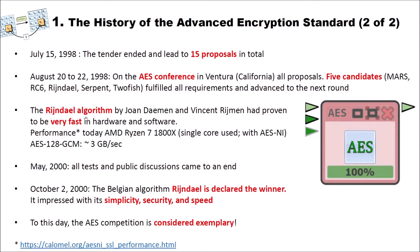The Rijndael algorithm by Joan Daemen and Vincent Rijmen had proven to be very fast in hardware and software, and indeed this then became the new AES. The performance of this algorithm today is really incredible. For instance, on an AMD Ryzen 7 1800X, only on a single core and using AES-NI — that is the assembler instruction set for the AES cipher — this machine can encrypt using AES 128-bit Galois counter mode at three gigabytes per second.